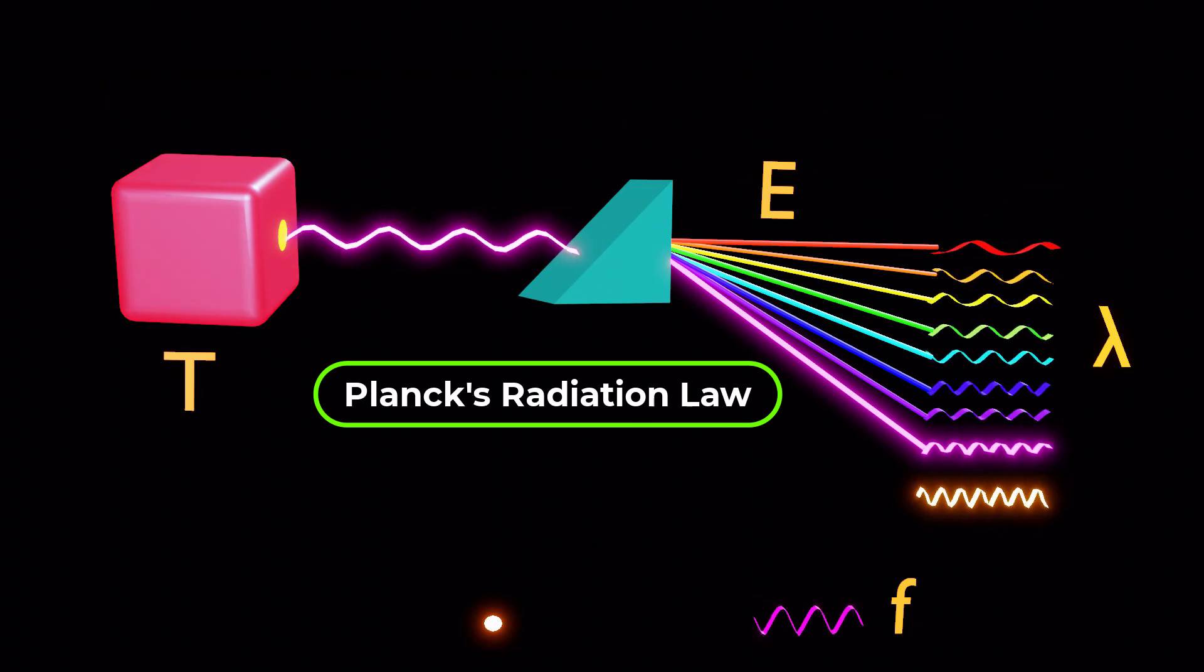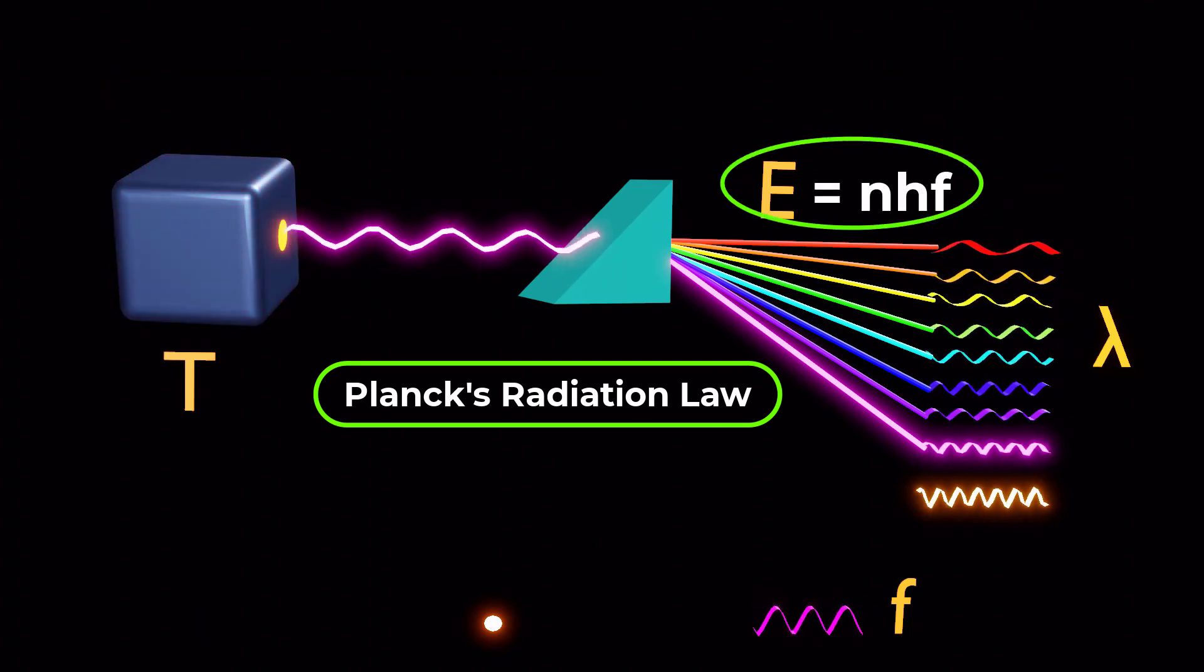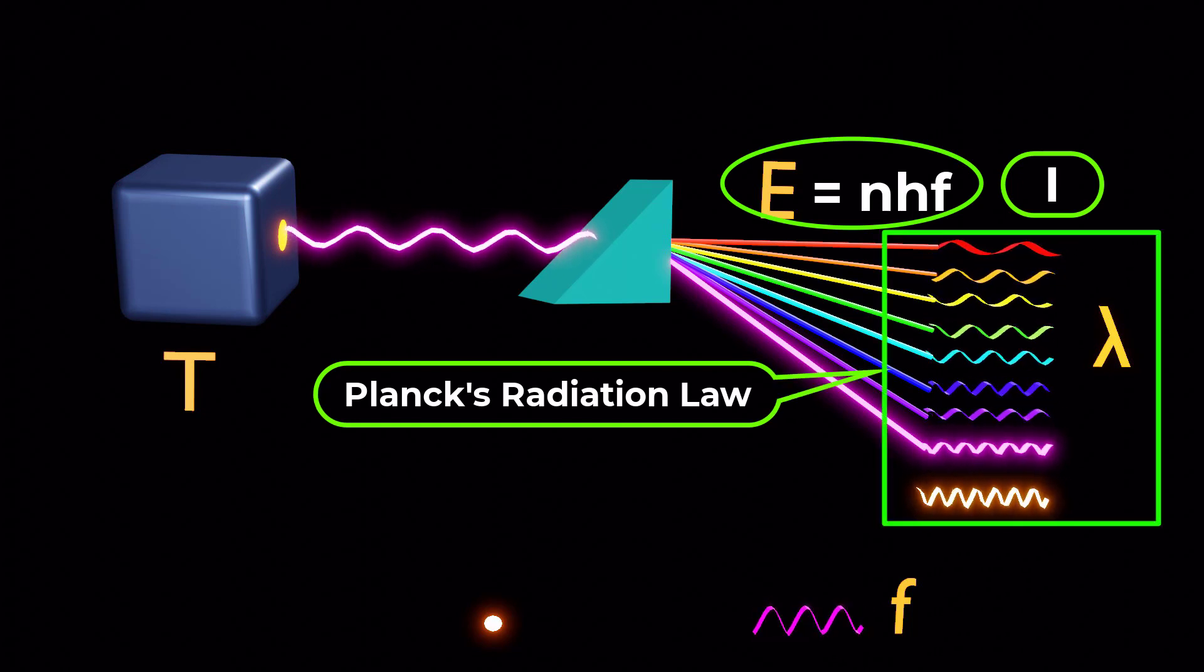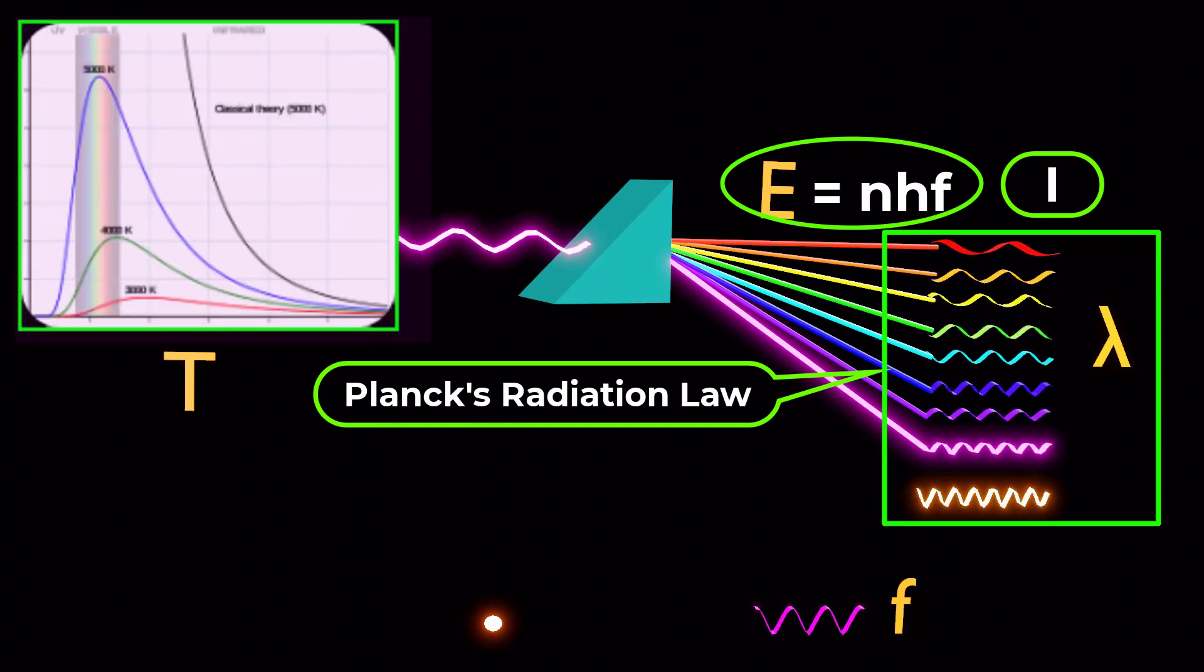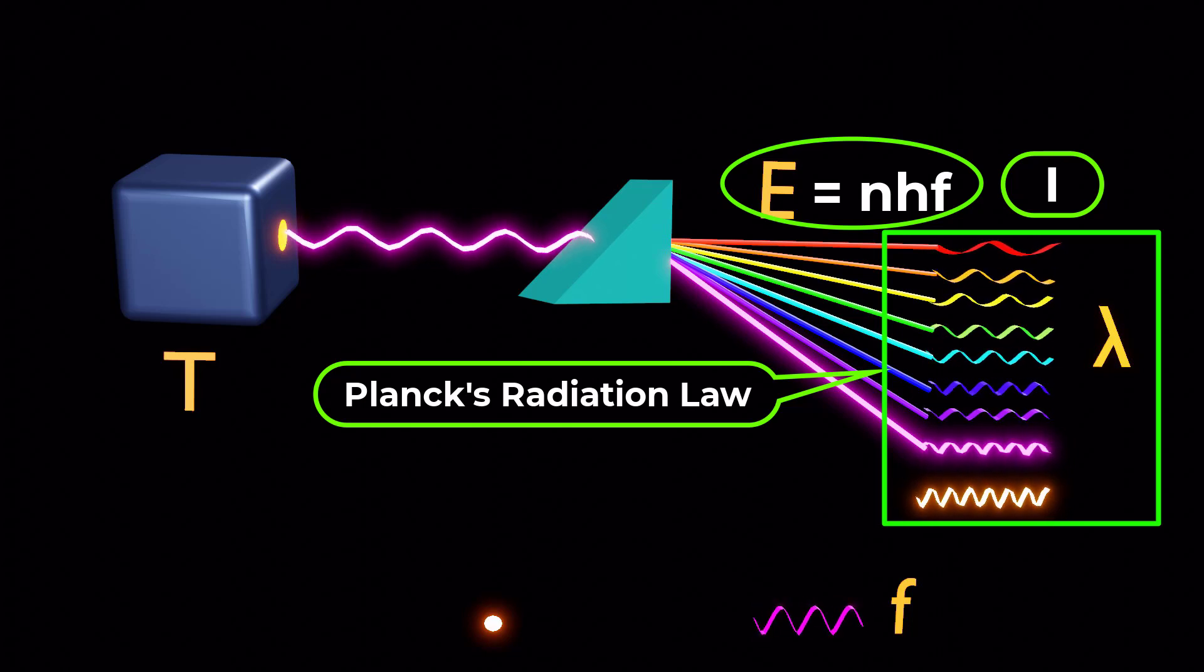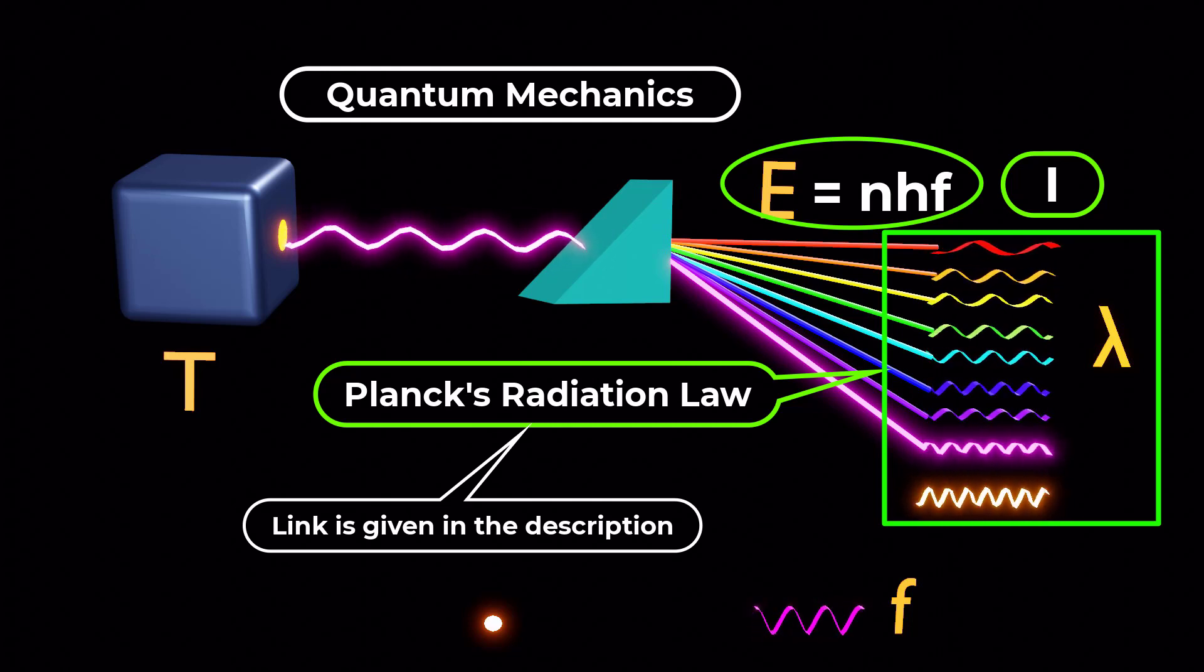Max Planck attempted to formulate an equation that would accurately describe the energy and intensity of radiation at both shorter and longer wavelengths. His radiation law successfully matched experimental data for the spectrum emitted by a black body. This significant achievement marked a crucial development in the early days of quantum mechanics, which we discussed in a previous video on the birth of quantum mechanics.